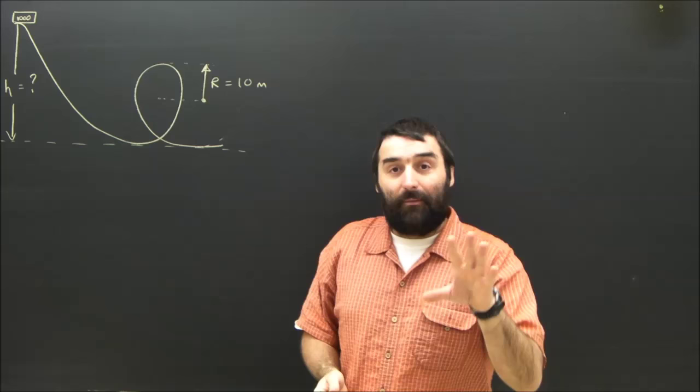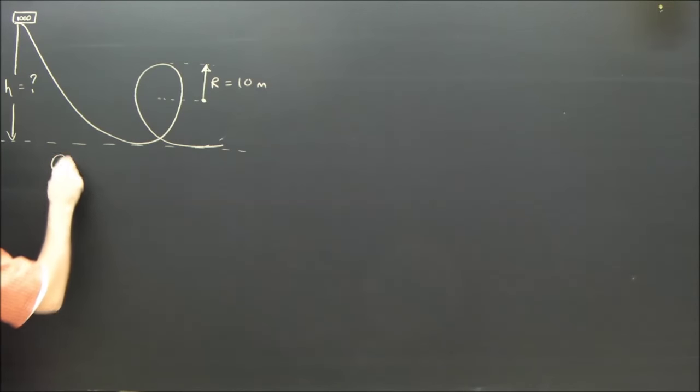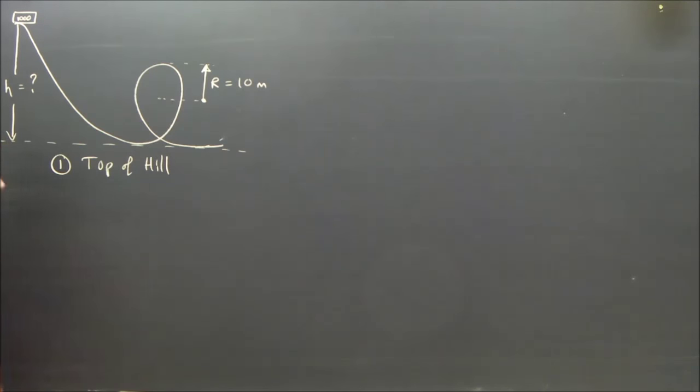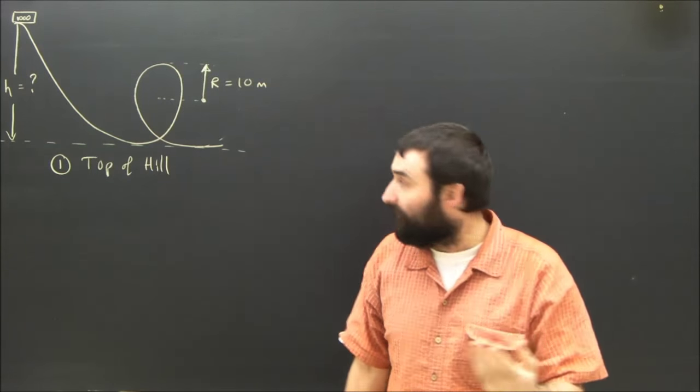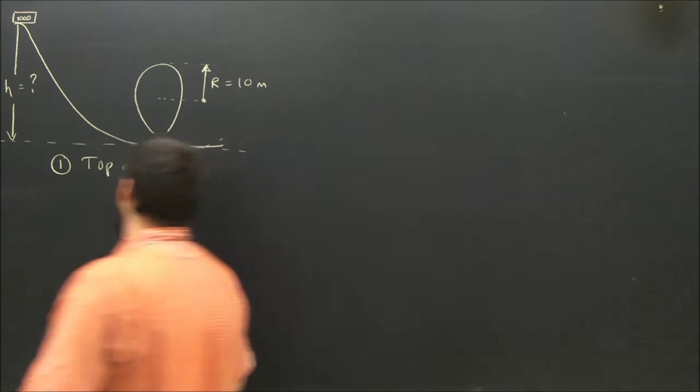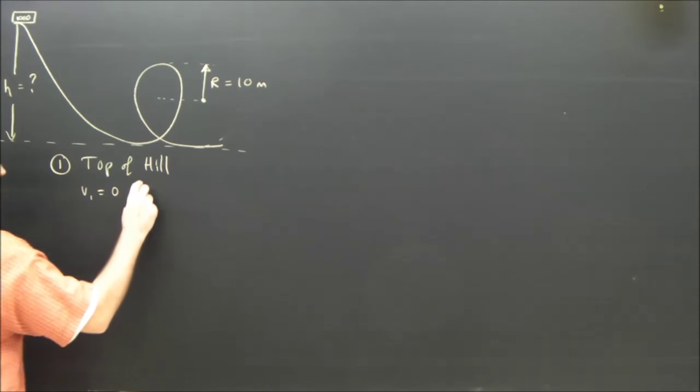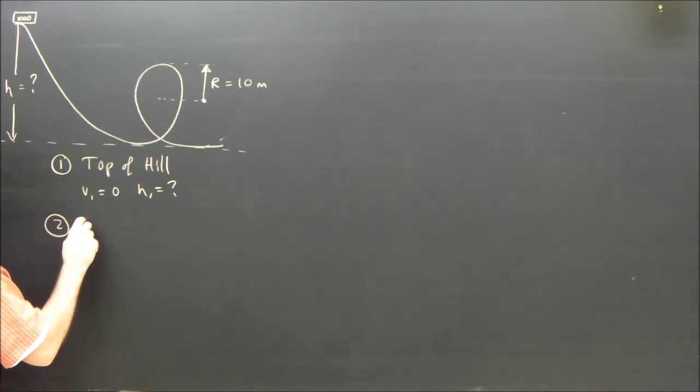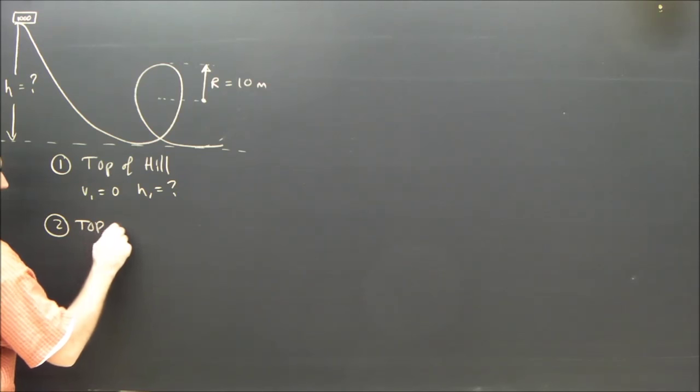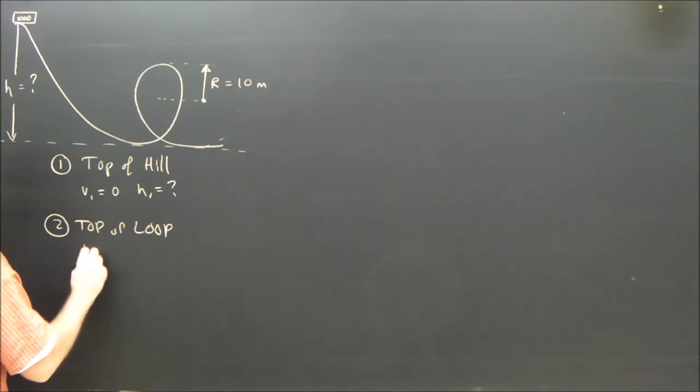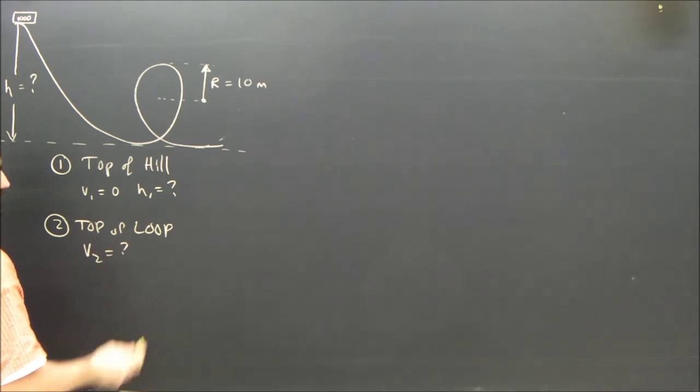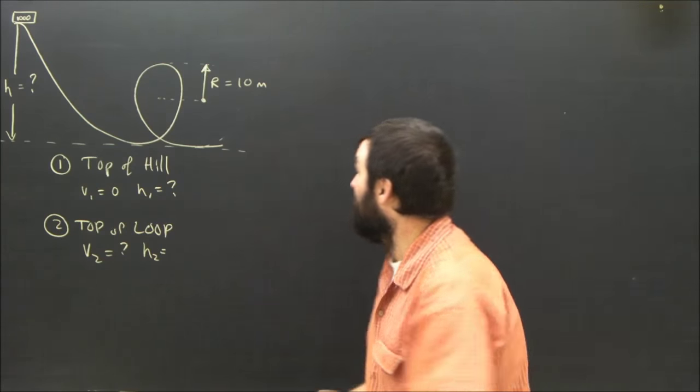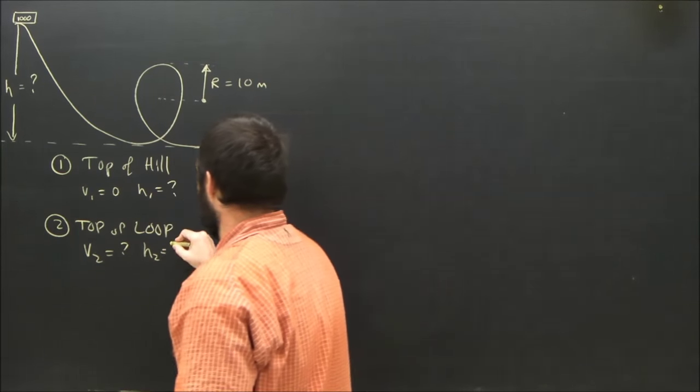So first of all, I'm going to call the top of the hill position 1. So then what I'm calling v1 would be the velocity of the roller coaster at the very beginning, and that's going to be 0. So v1 equals 0, and height 1 is really what we're trying to find. The other position we're going to be interested in, position 2, is at the top of the loop. So that's v2, and that'll be h2 for the purposes of our conservation of energy. And the height of the loop is twice the radius of the loop, so that's going to be 20 meters.